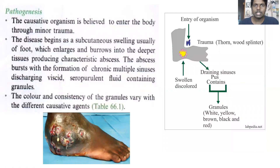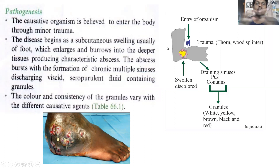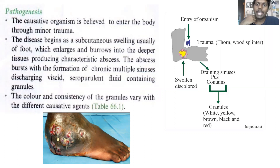Coming to the pathogens — what exactly happens is this fungi will gain entry into the foot by any trauma. Whenever there is a small damage to the foot, the fungi start to gain entry and go inside the foot. After gaining entry, the foot will start swelling and will become inflamed. Within this inflamed area, it will start forming an abscess.